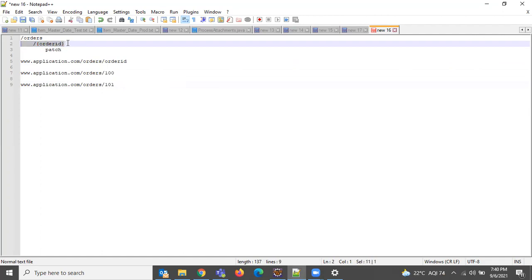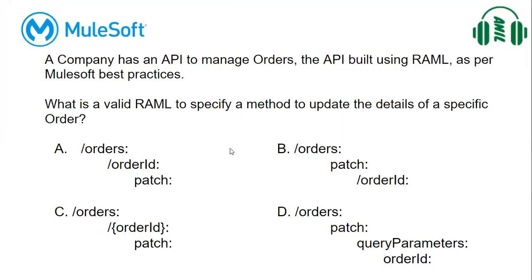When we give the order ID in curly braces, it is expected as a URI parameter in the URL. So the correct option is: /orders/{orderID} with PATCH. Option A is not correct. B is also no. C is the correct answer — orders/{orderID} in curly braces and then PATCH. This is the update method, because we're updating details of a specific order, which expects a value as an input parameter. So answer is C.